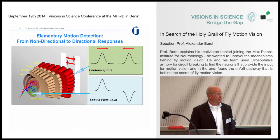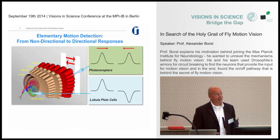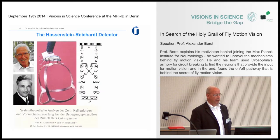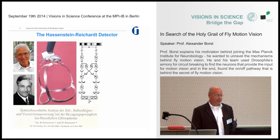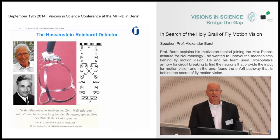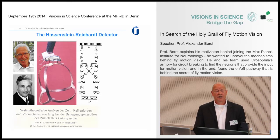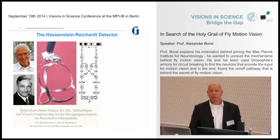By looking at the output of this neuron you can tell the direction of motion — we go from a non-directional to a directional response. This requires computation, defined by Hassenstein and Reichardt more than 50 years ago in their famous Hassenstein-Reichardt detector model. They did behavioral experiments on a beetle walking on a spherical Y-maze, and from these quantitative behavioral measurements concluded a model to underlie motion vision. They called it an elementary motion detector, assuming this computation occurs between each of the facets, so you have a two-dimensional array of local motion detectors covering the whole visual field.